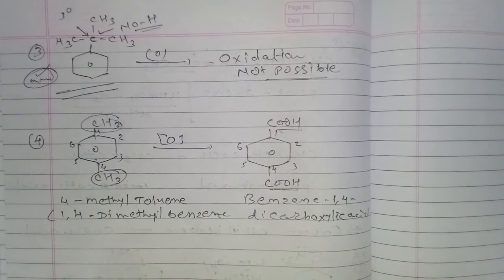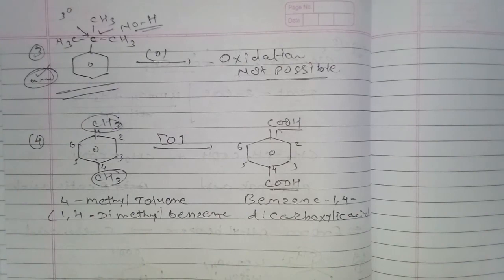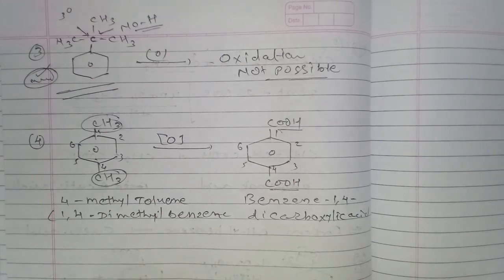This is the concept about the preparation of carboxylic acid. Next time we will discuss the preparation of carboxylic acid from nitrile, amide, Grignard reagent, and acid halide and ester. Thank you very much.